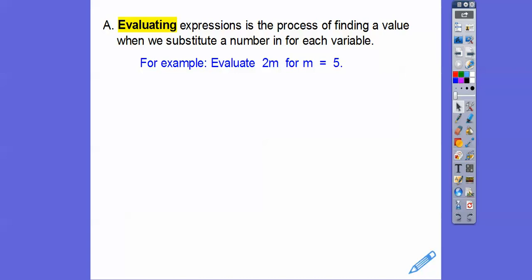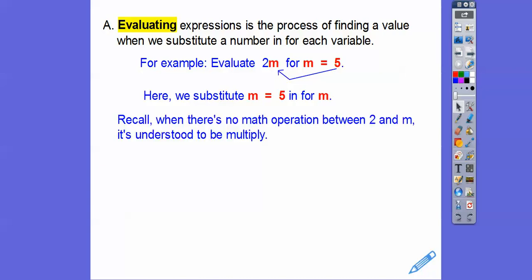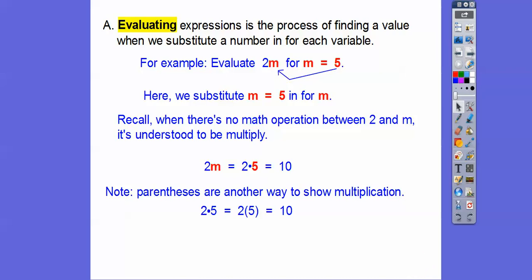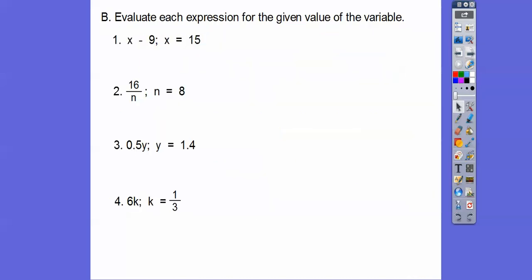a number in for each variable. For example, evaluate 2m when m equals 5. So what we have to do is substitute in m equals 5 right next to the 2. When there's no math symbol between 2 and m, it's understood to be multiply. So 2 times 5 is going to be 10. Note: parentheses are another way to show multiplication. So 2 times 5 with parentheses, you still get 10.